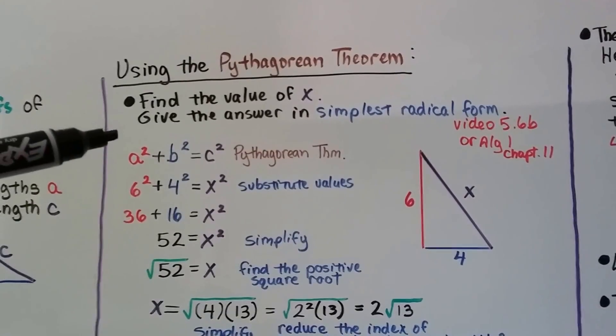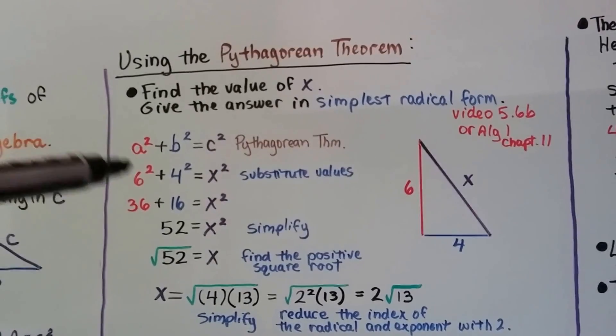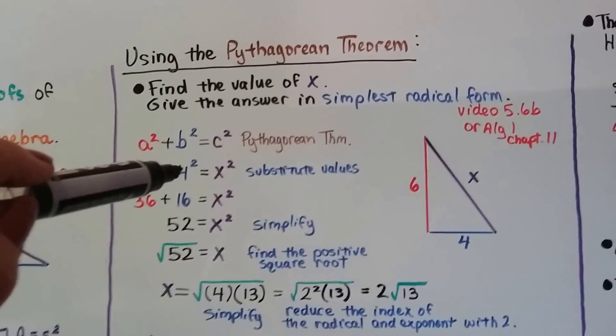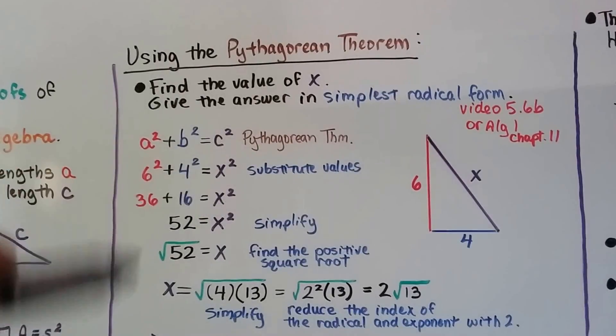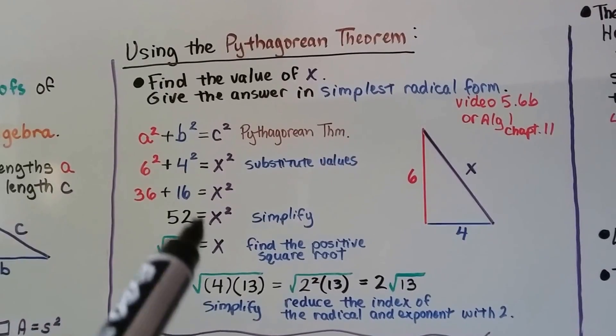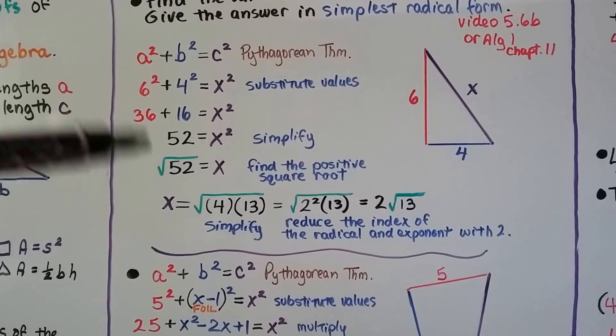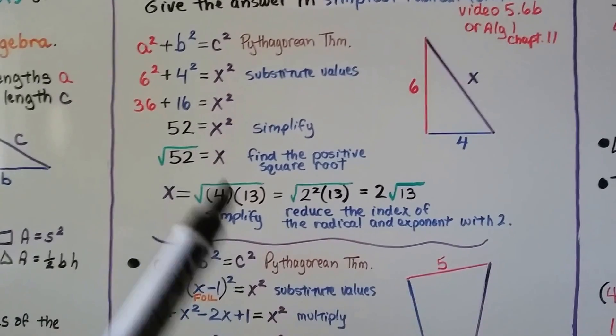So we've got our Pythagorean theorem. We substitute in the values. For a, it's 6. For b, it's 4. We've got 6 squared, which is 36. 4 squared, which is 16. And it's going to equal x squared. We add these two guys together. We get 52 equals x squared. We can take this little two exponent off by putting a radical around this side. And we get the square root of 52 equals x.